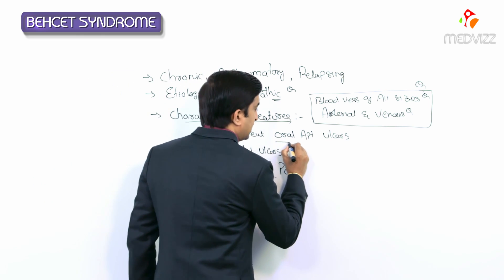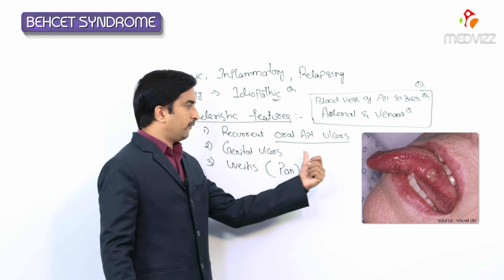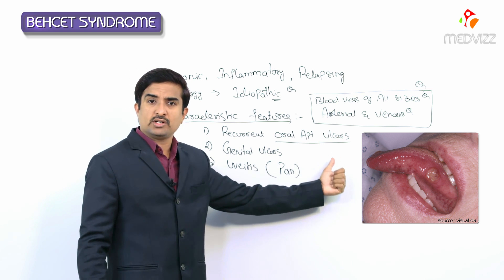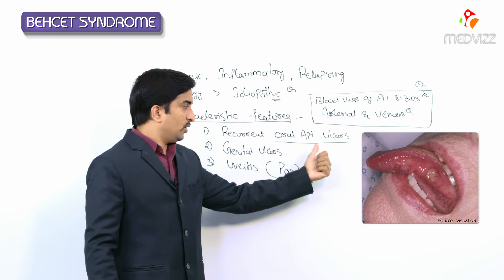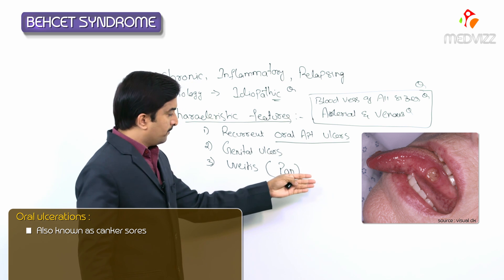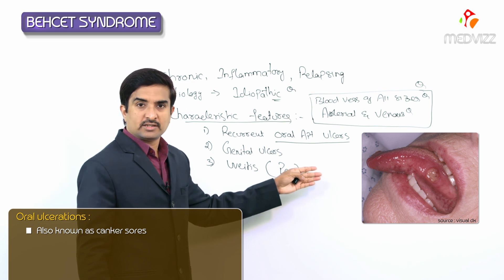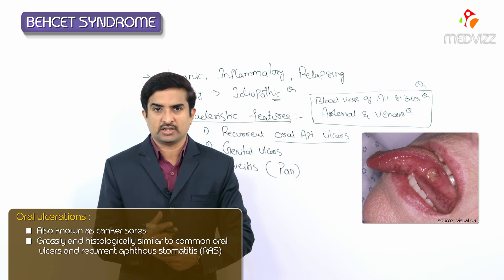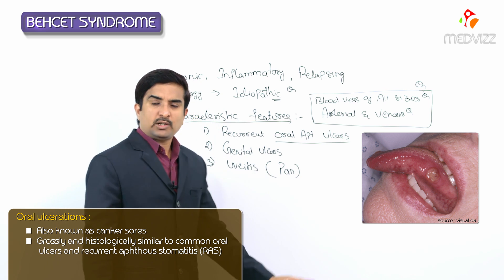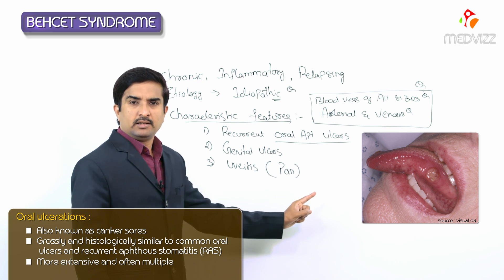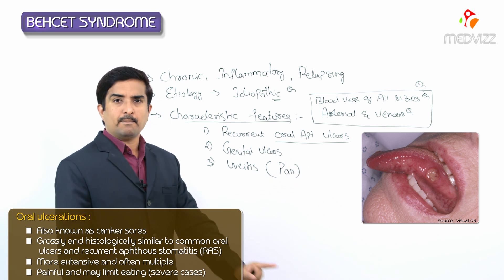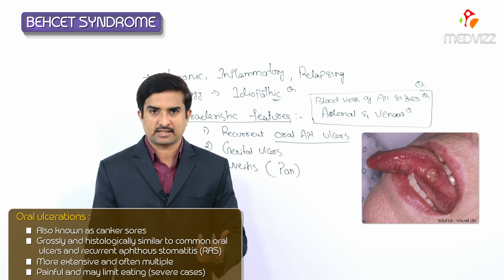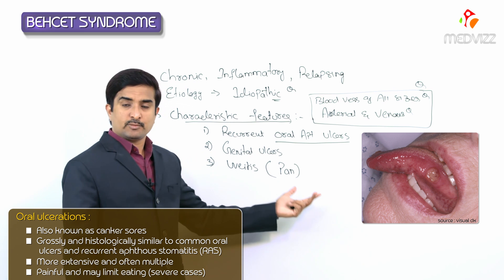Regarding oropharyngeal manifestations: majority of patients initially manifest recurrent oral apthous ulcerations, known as canker sores. These are grossly and histologically similar to common oral ulcers, but tend to be more extensive, often multiple, more severe, and more painful. In most severe cases, these ulcers may also limit eating.